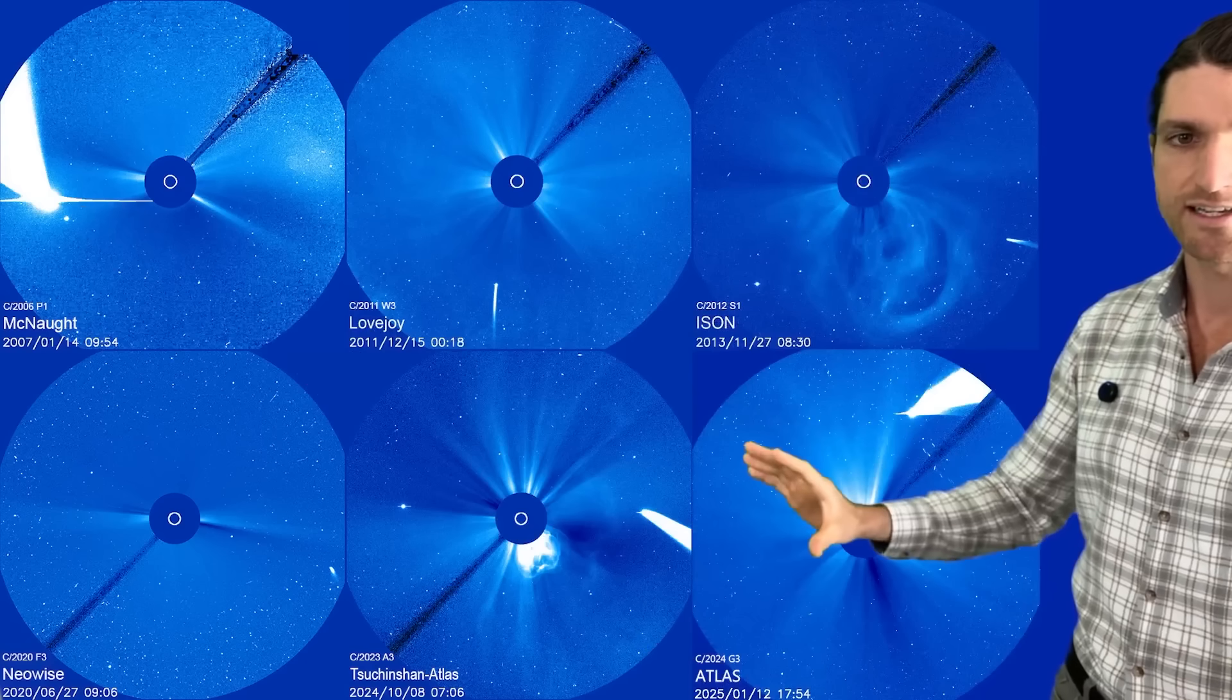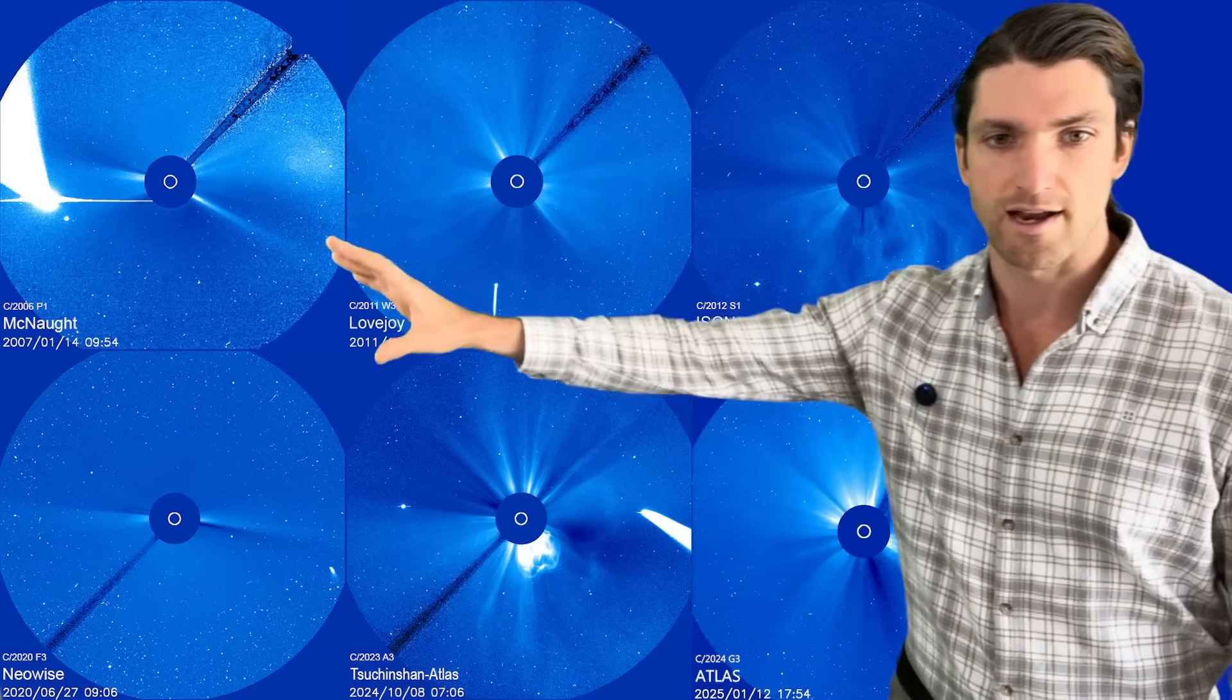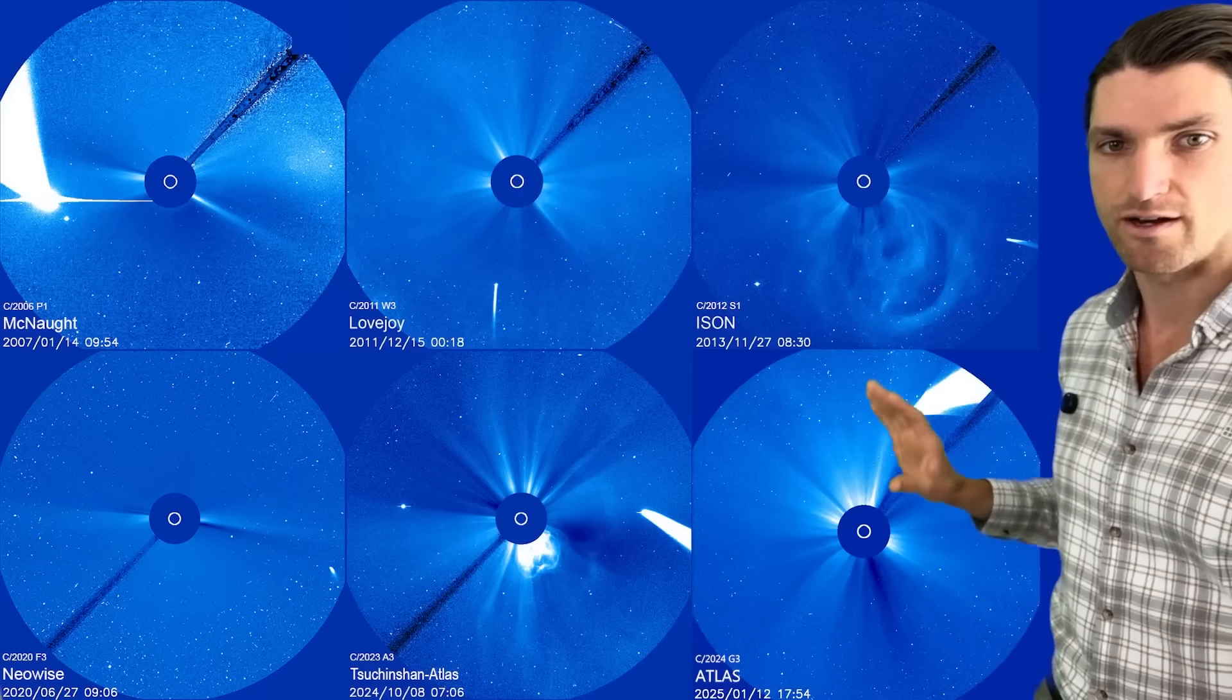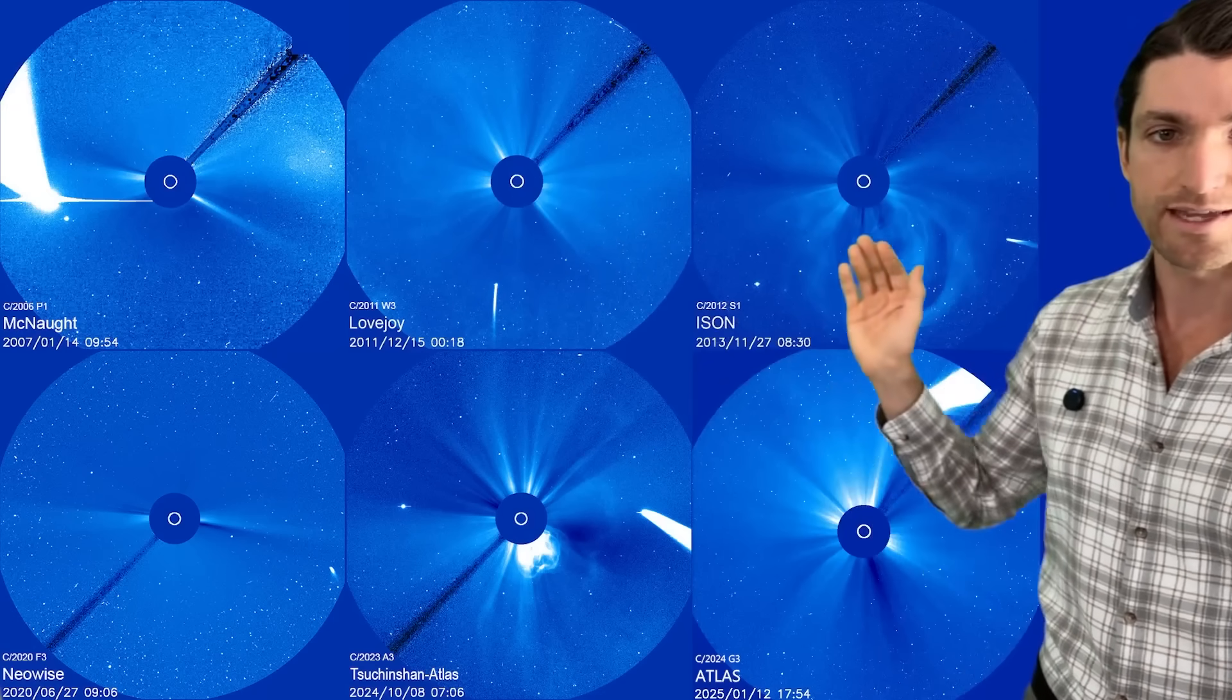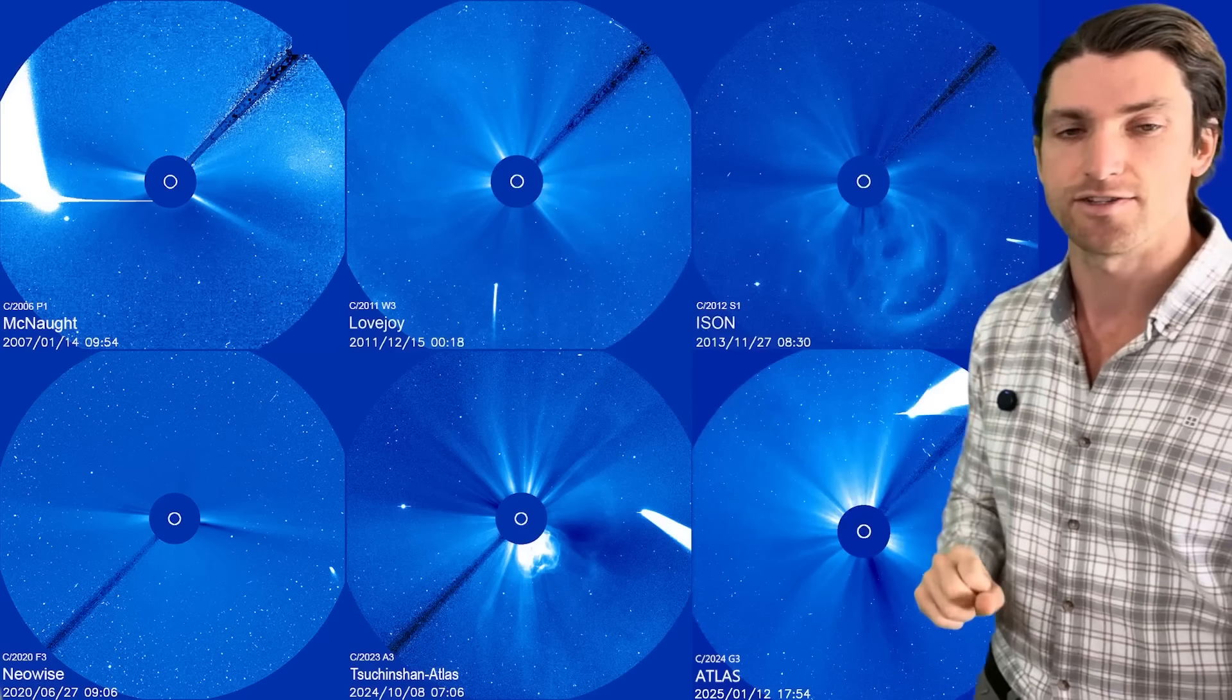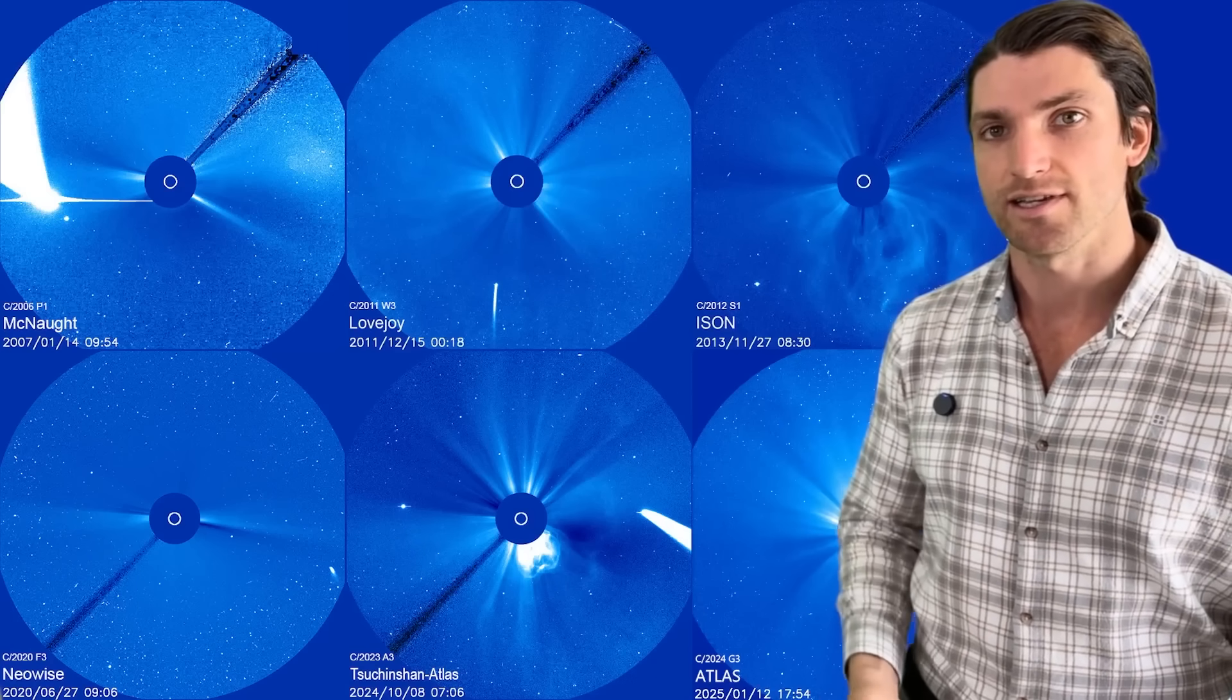But you see the relative sizes, to some degree, of these comets here. Tsuchinshan, McNaught, and Atlas being all significantly larger, at least with this field of view, than these comets. I think it's likely to survive its perihelion, unlike some of the other comets that we've had recently. Let's check it out.